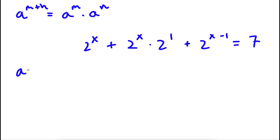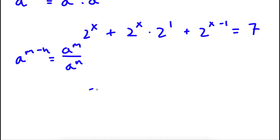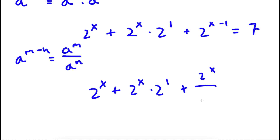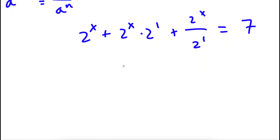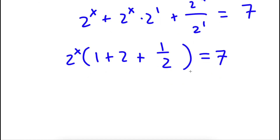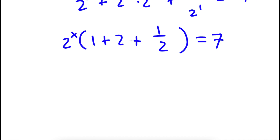Now, if I have something in the form a to the power of m minus n, this is equal to a to the power of m over a to the power of n. So 2 to the power of x minus 1 can be rewritten as 2 to the power of x over 2 to the power of 1. If I factor out 2 to the power of x from the left-hand side, I get 2 to the power of x times 1 plus 2 plus 1 over 2, which is equal to 7. Now 1 plus 2 is 3, and 3 plus one half is 7 over 2. So now I have 2 to the power of x times 7 over 2 is equal to 7.